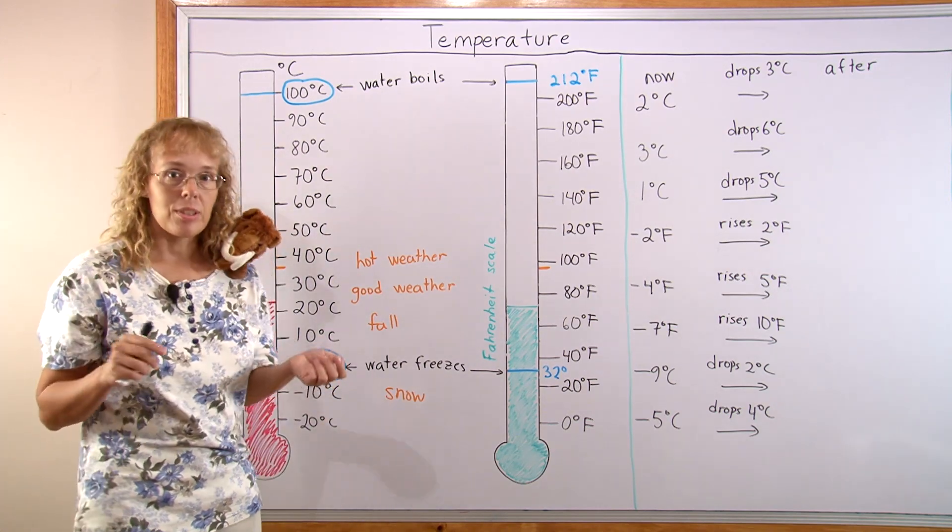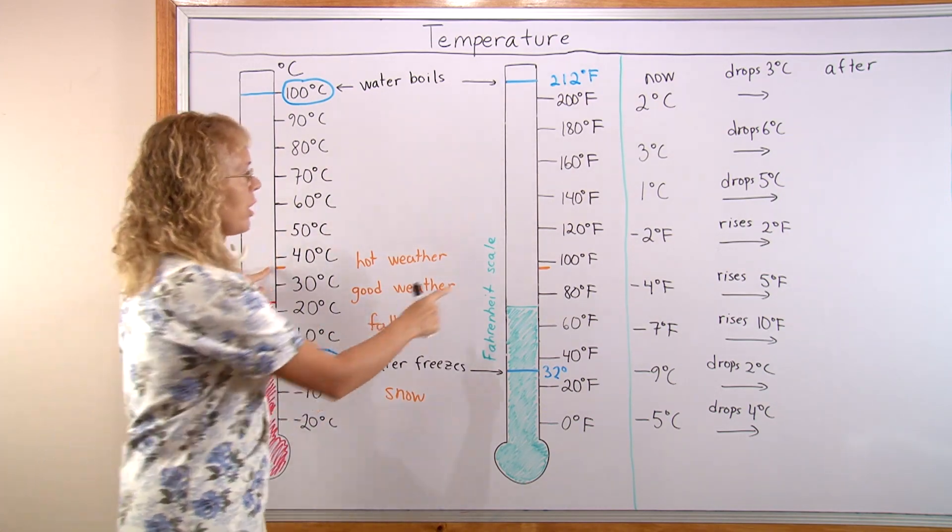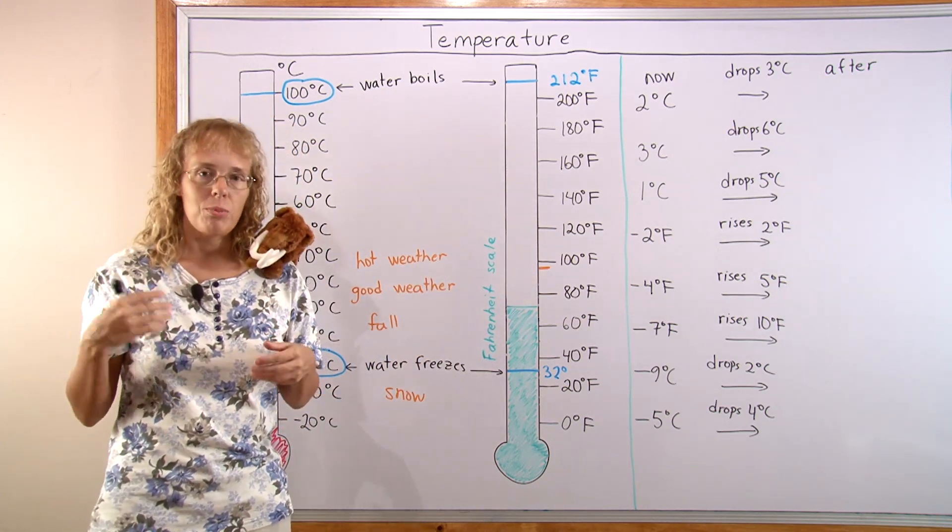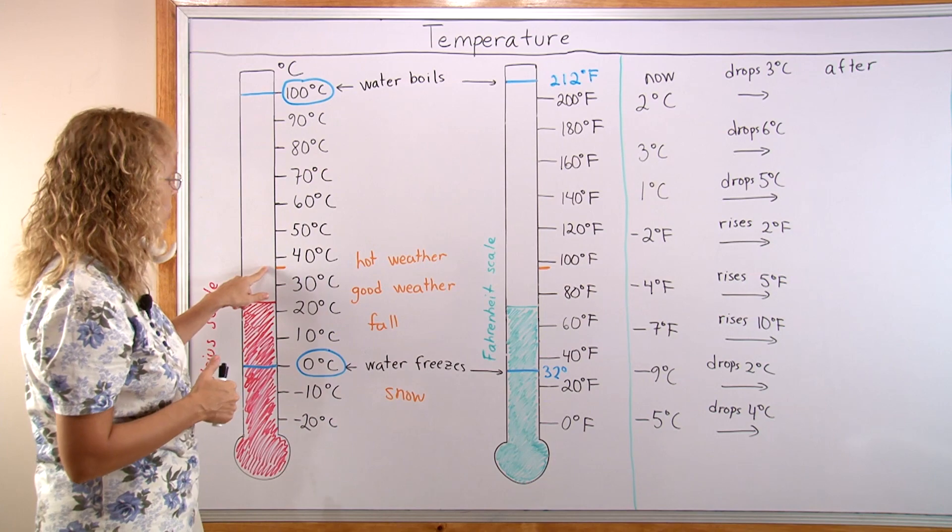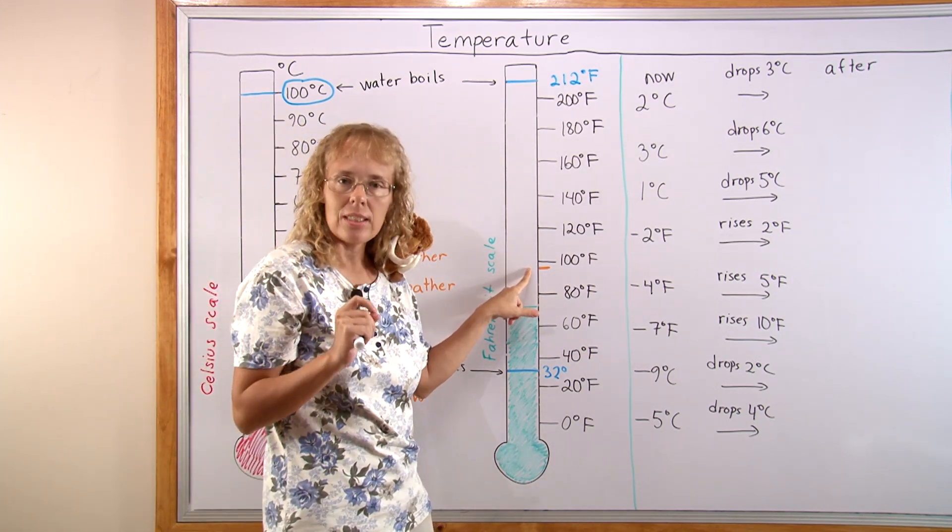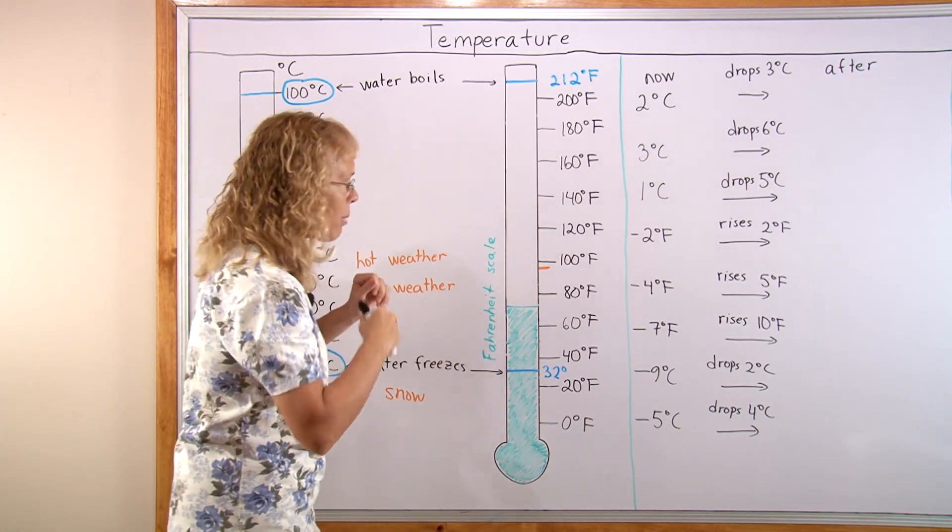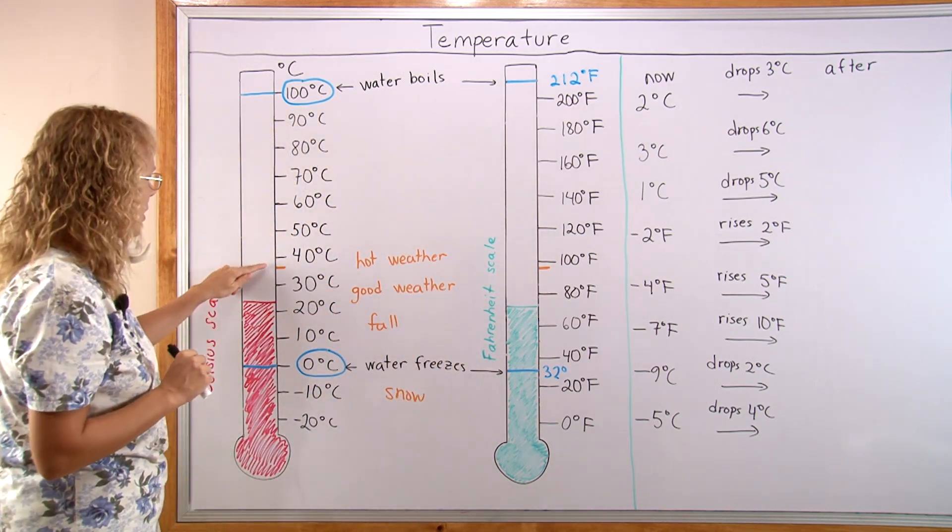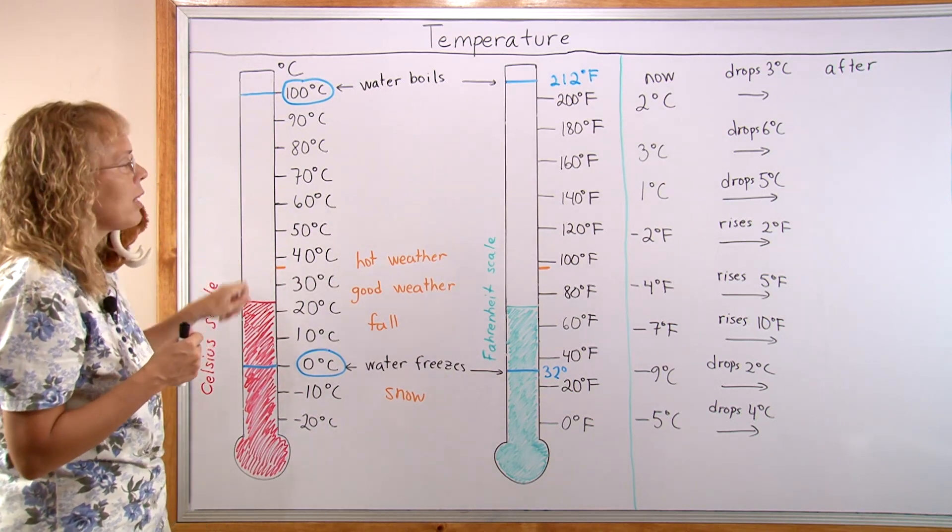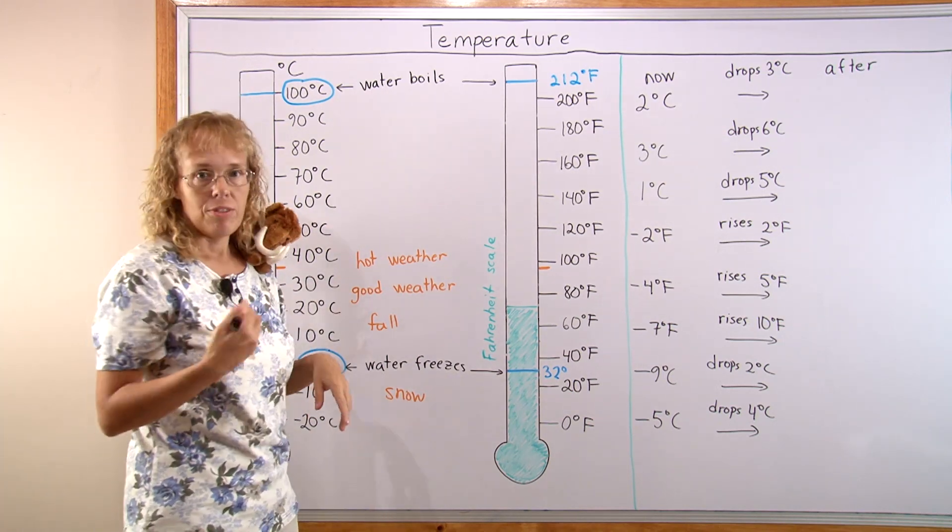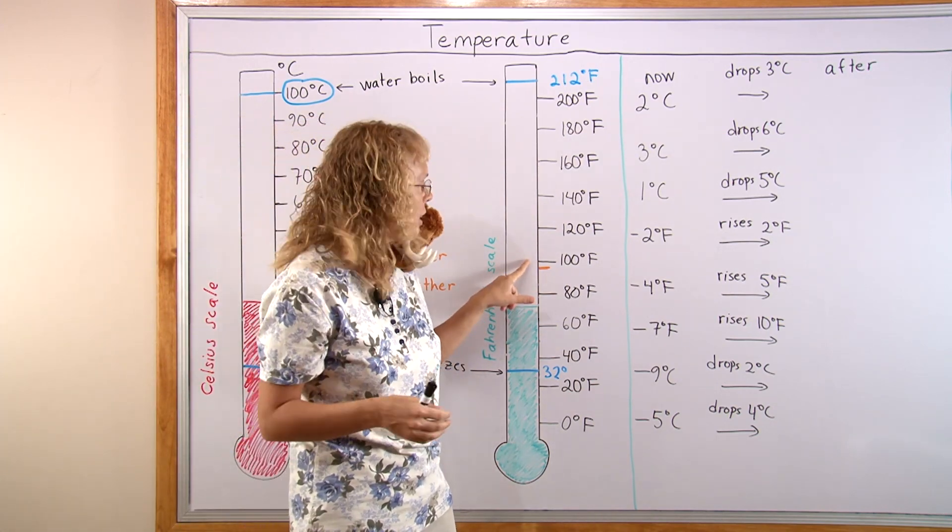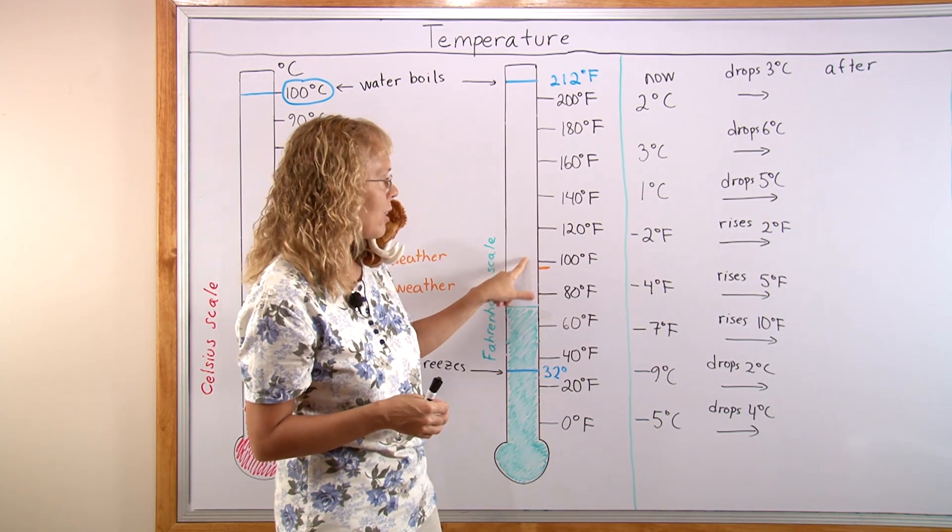One more thing I want to point out is this temperature here. It is the normal body temperature for human beings. In Celsius it is 37 degrees, and in Fahrenheit it is 98.6 degrees. Above that you have fever. Let's say 38 degrees or 37.5, 39, 40, 41, 42 is fever. In Fahrenheit you might have 99 degrees or 100, 102. These would be fever temperatures.